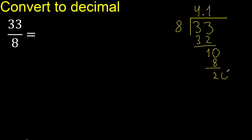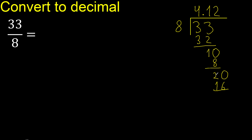There is no number, therefore always complete with 0. Point is here — 20. 8 multiplied by 3 is greater, multiplied by 2 is 16. 20 minus 16 is 4.